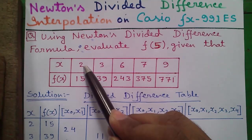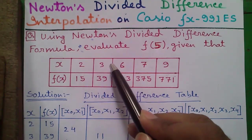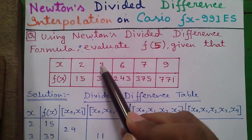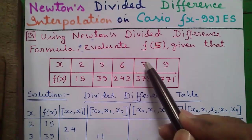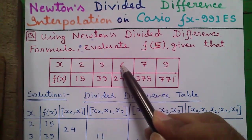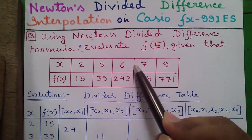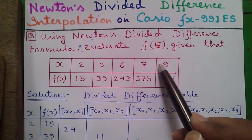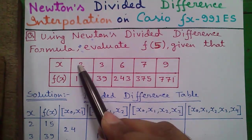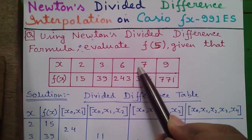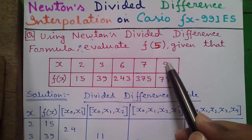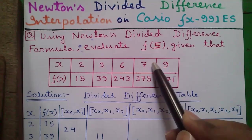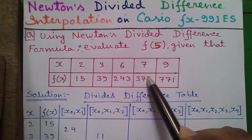3 minus 2 is 1. But here the gap is 3 — 6 minus 3 is 3. Then again the gap reduces to 1 — 7 minus 6 is 1. Then again it increases to 2 — 9 minus 7 is 2. Here there is not even gapping or equal spacing between each term of x. In this kind of interpolation table, we use Newton's divided difference interpolation formula.